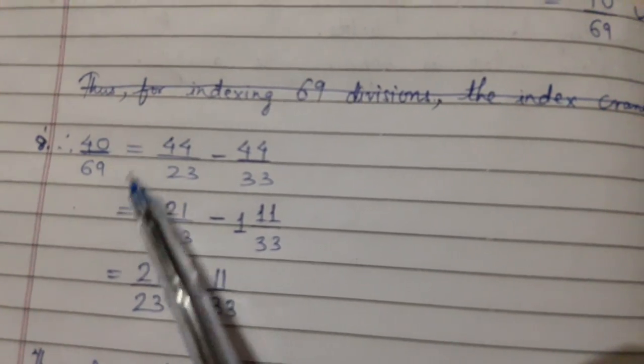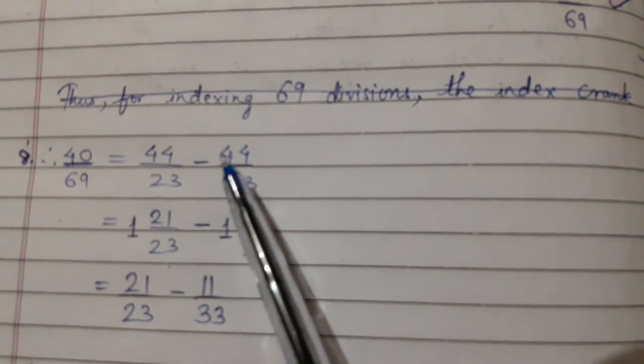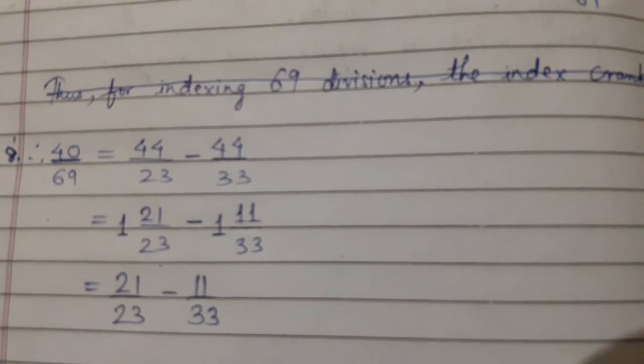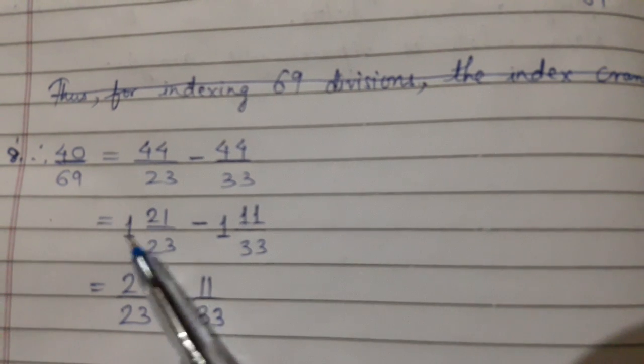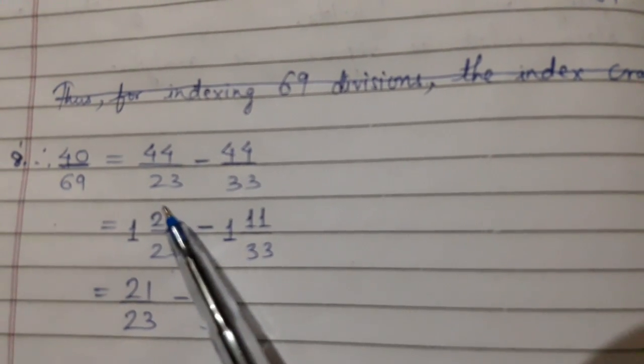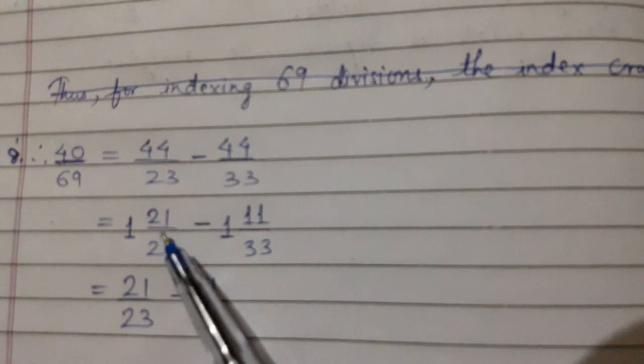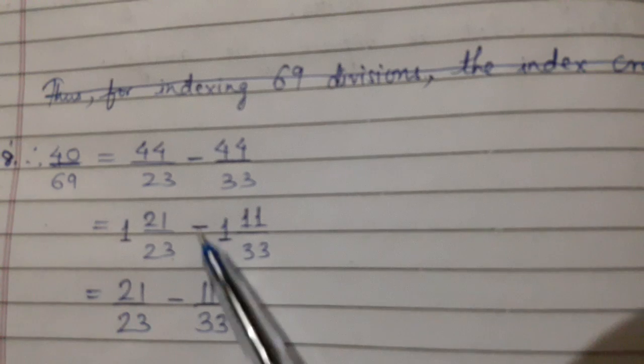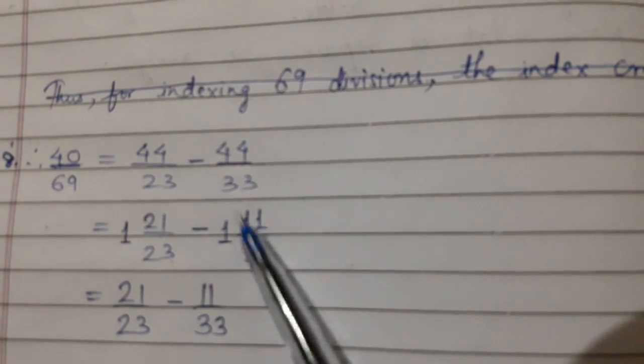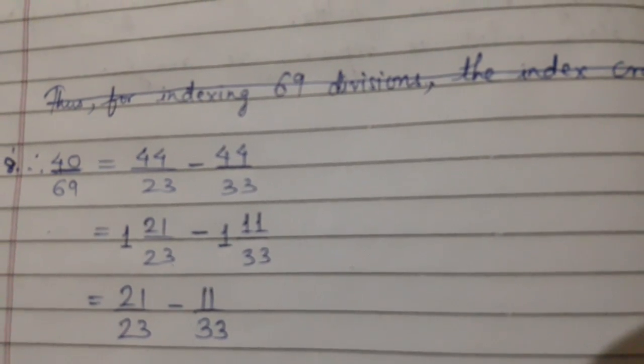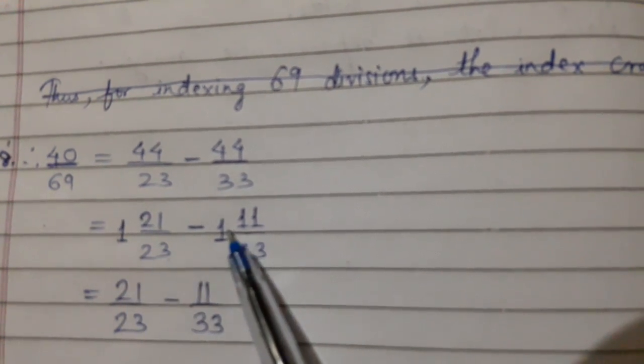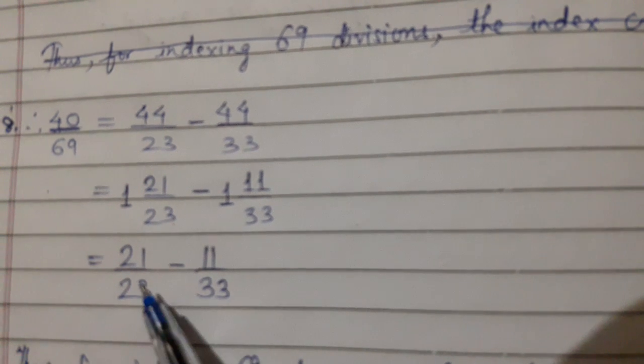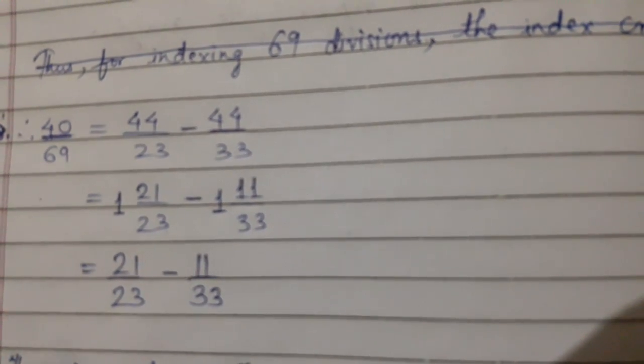So therefore 40 upon 69 is equal to 44 upon 23 minus 44 upon 33. Then we did division and then we got quotient as 1, remainder as 21, and divisor as 23. Similarly we got quotient here 1, remainder as 11, and divisor as 33. Since here also it is 1 and here also it is 1, so we will not consider this 1. And now we are left with 21 upon 23 and 11 upon 33.